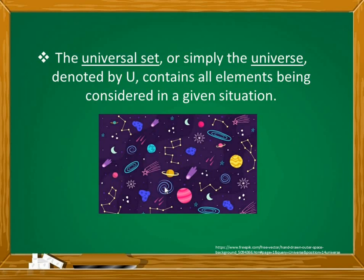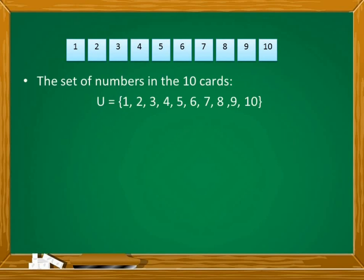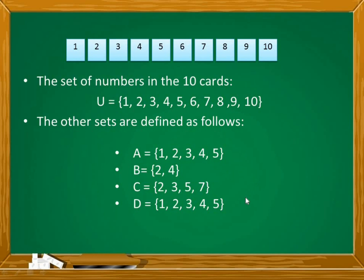Stars, planets, solar systems, galaxies — everything. We can consider universal set as our main set. Using the previous example, the set of numbers in the 10 cards is our universal set or the main set. And from the universal set, we formed the other sets A, B, C, and D. In other words, sets A, B, C, and D are just parts that came from our universal set.